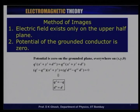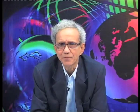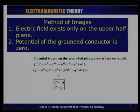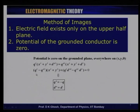This equation must be satisfied at all points x, y on the plane. Therefore both terms must separately equal zero, which implies q² = q'². Since q and q' must be of opposite sign, q' = −q. Substituting back, we find d' = d. The image charge has the same magnitude but opposite sign to the object charge, and the image distance equals the object distance but is located below the conducting plane.